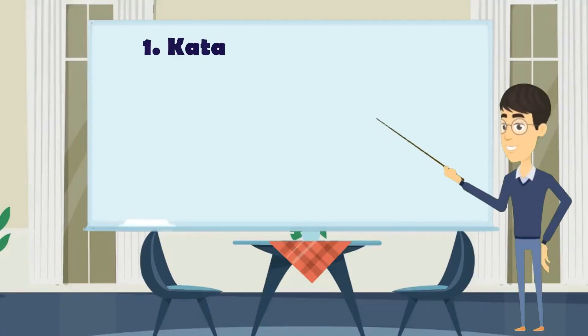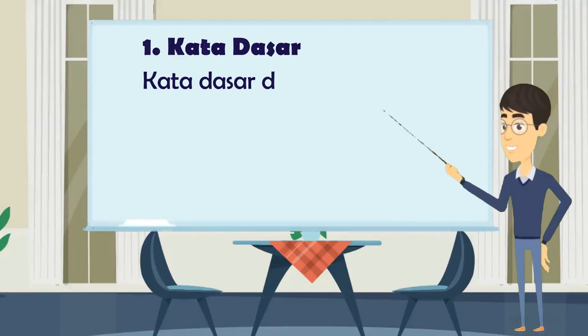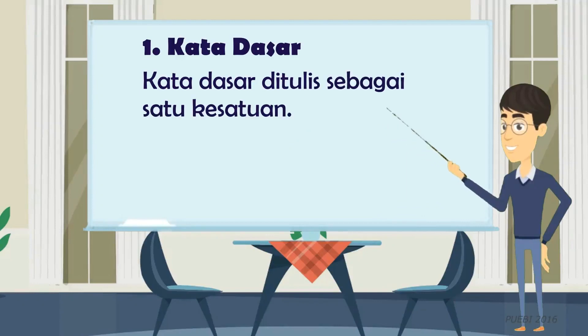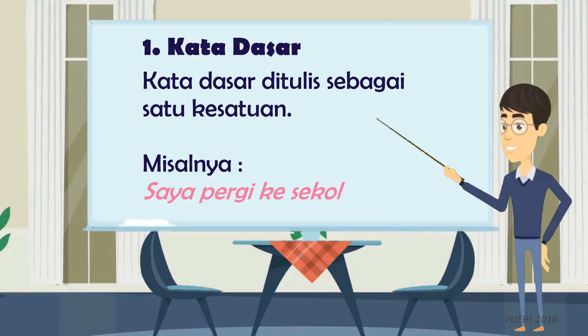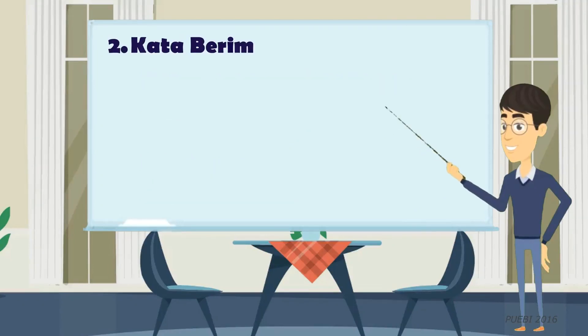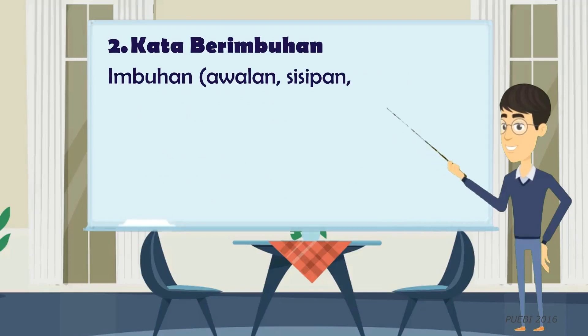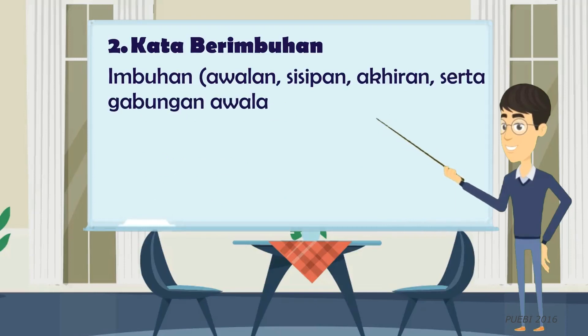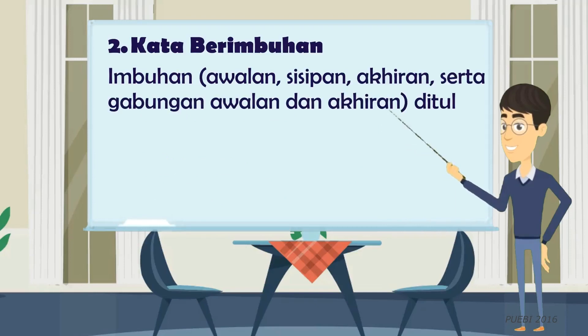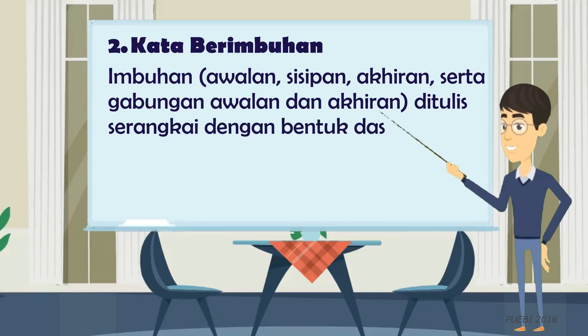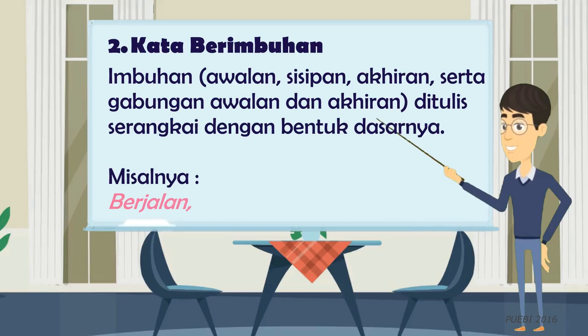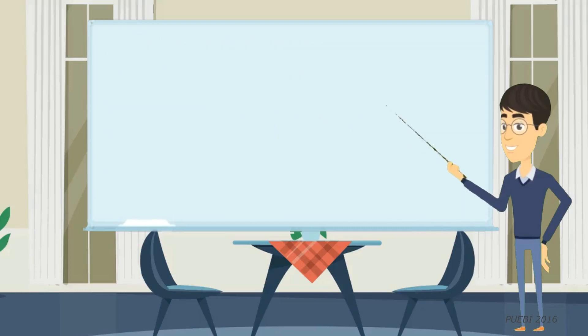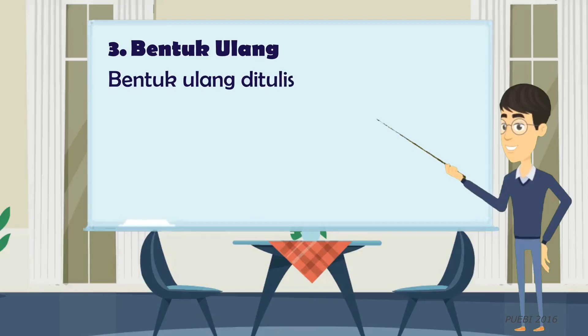Penulisan kata berdasarkan pedoman umum ejaan bahasa Indonesia dijelaskan sebagai berikut. Kata dasar ditulis sebagai satu kesatuan, misalnya 'Saya pergi ke sekolah'. Kata berimbuhan: imbuhan atau awalan, sisipan, akhiran, serta gabungan awalan dan akhiran ditulis serangkai dengan bentuk dasarnya, misalnya berjalan, berkelanjutan.